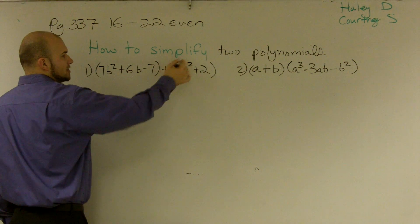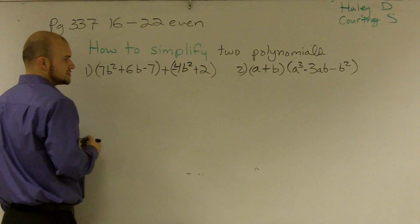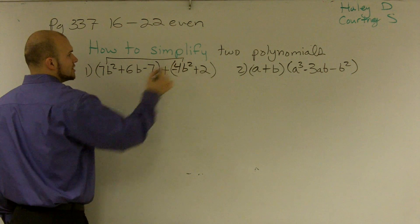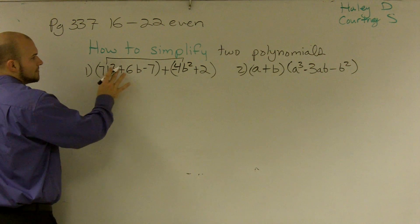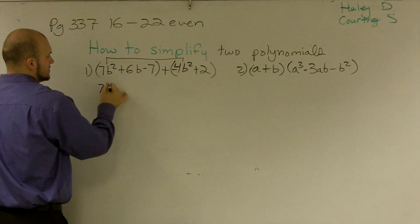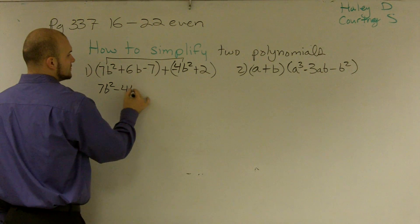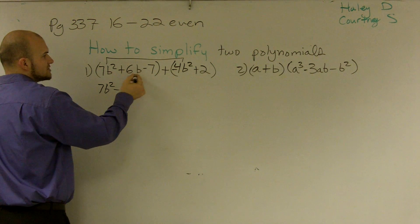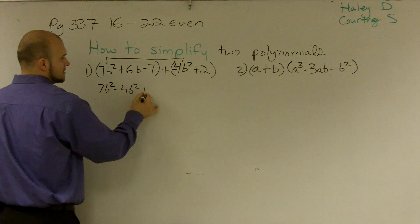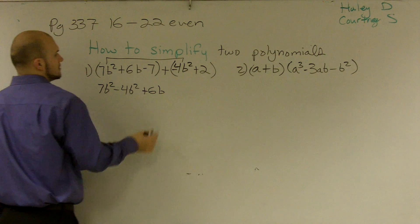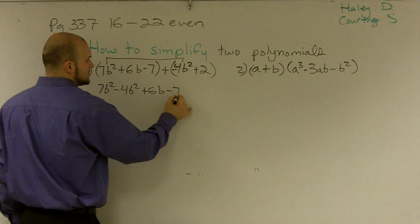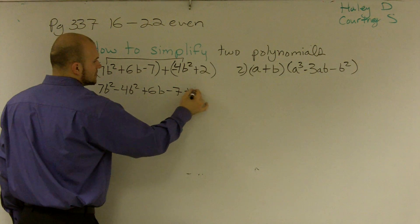Because what I did was I multiplied a negative into each one of those terms. Now I'm going to connect the terms, or combine my like terms. So I have 7b squared minus 4b squared, then 6b — there's nothing else that has just b to the exponent of 1 — and then I have a negative 7 plus 2.